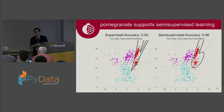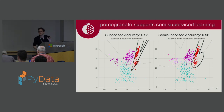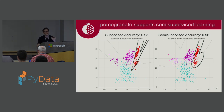You see lots of cases — very often in image and text analysis — where semi-supervised analysis performs much better than supervised, because it really leverages the distribution of the underlying data. Semi-supervised analysis makes a lot of sense in a probabilistic framework, which is why it's really well-suited to something like Pomegranate.